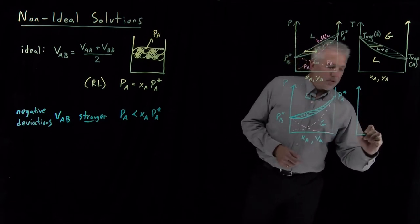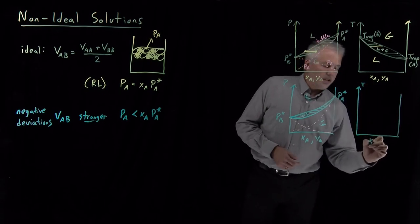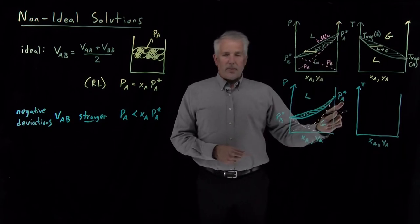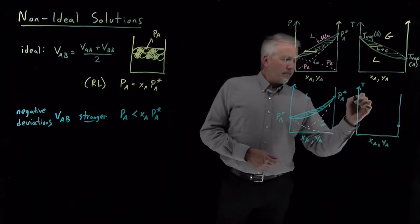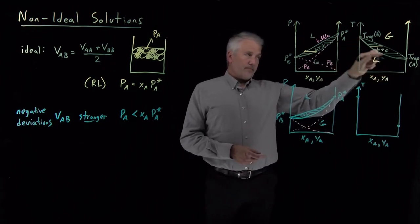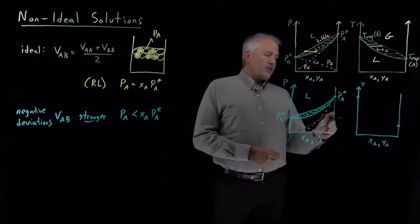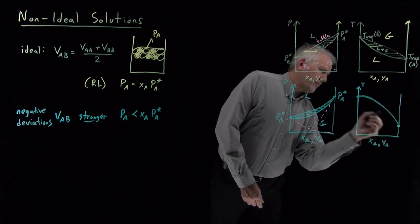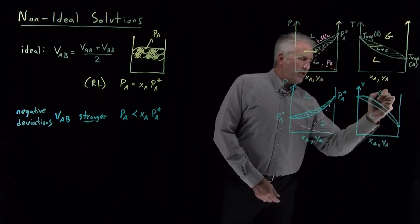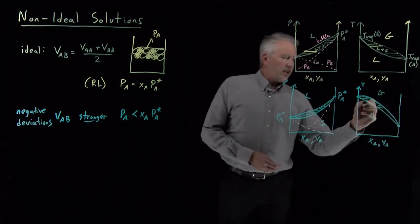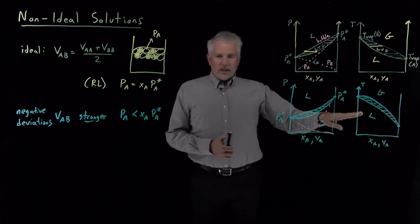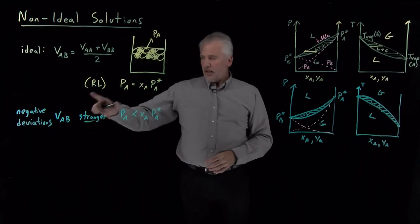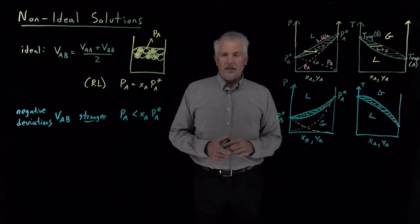Using the same logic for the temperature-composition diagram: since systems with a higher vapor pressure are more volatile and have a lower boiling point, the T-x diagram is essentially the pressure diagram inverted. For negative deviations, instead of the pressure deviating downward, the temperature deviates upward — the boiling points are elevated relative to Raoult's law. We still have liquid, gas, and a coexistence region with tie lines, but boiling points are higher because the pressures are lower than Raoult's law predicts.